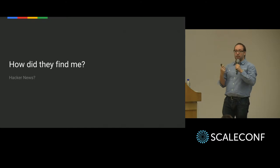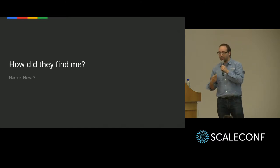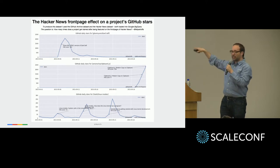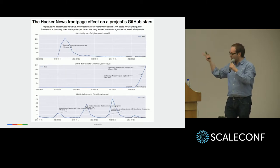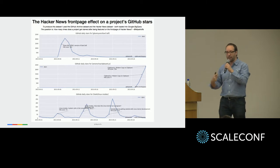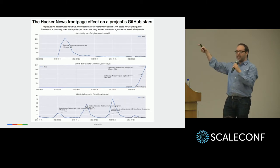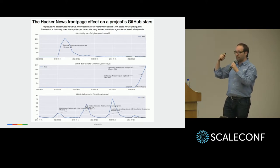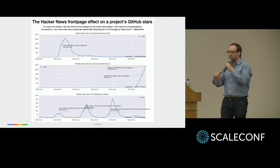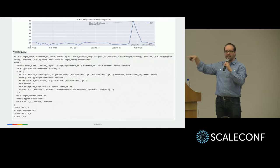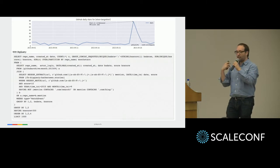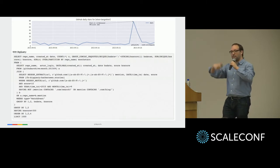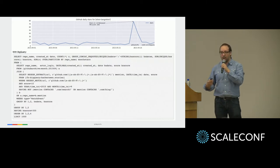Every time that happens, you might wonder how people found you. I have the number of stars of these projects, and the annotations are every time that a project showed up on Hacker News. People get interested in your project if you feature it there. What's interesting is these annotations were not added manually — I also have all of Hacker News in BigQuery, so I was able to run a join and find every time a project shows up on Hacker News it gets a lot of stars. So if you have your own project and you want to make it popular, put it on Hacker News.